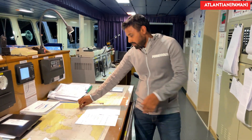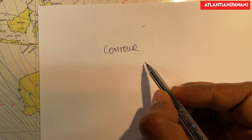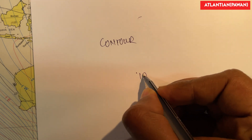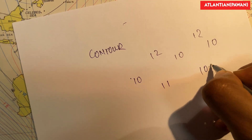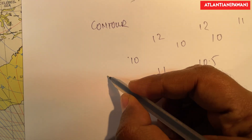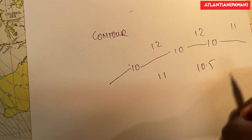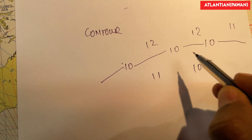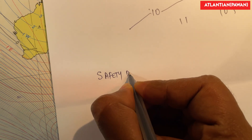So let's start. First, what is a contour? A contour is a line which joins places which have equal depth. Let's say this is a chart — if I have depths around here and I join these lines, this becomes a contour of 10 meters. So this is what a contour is.